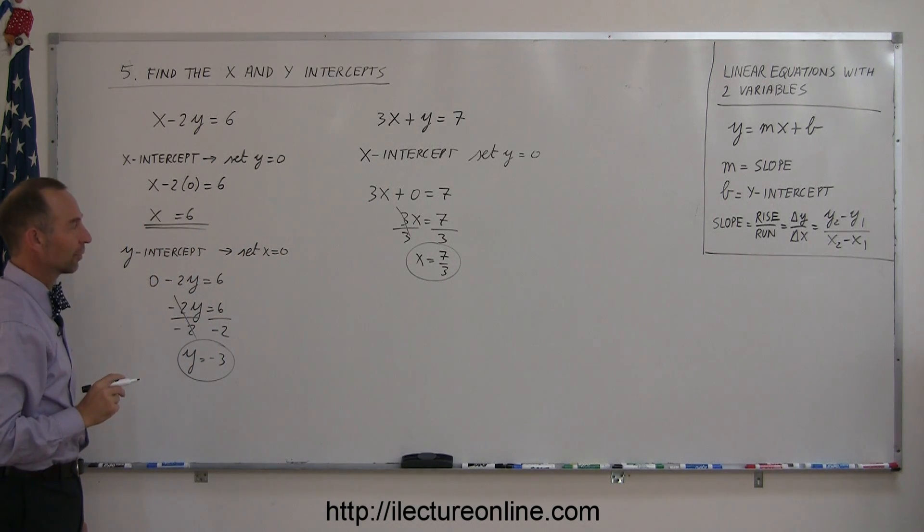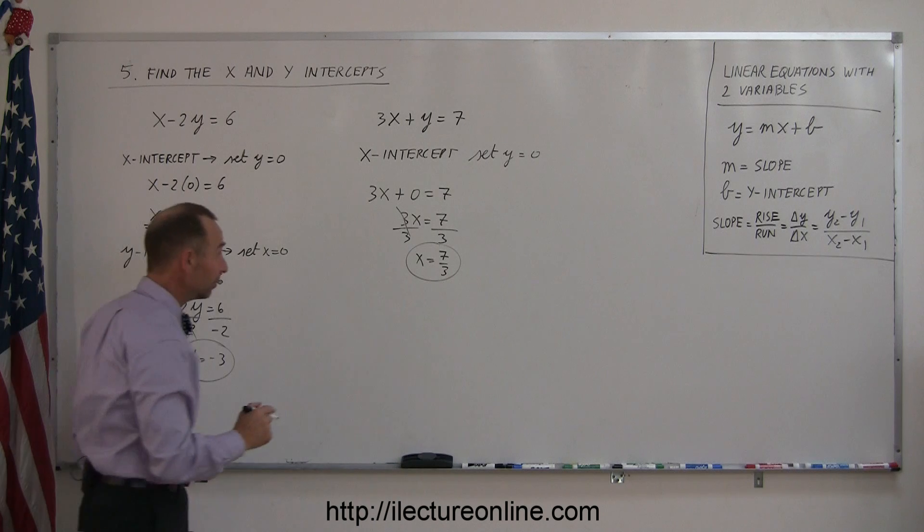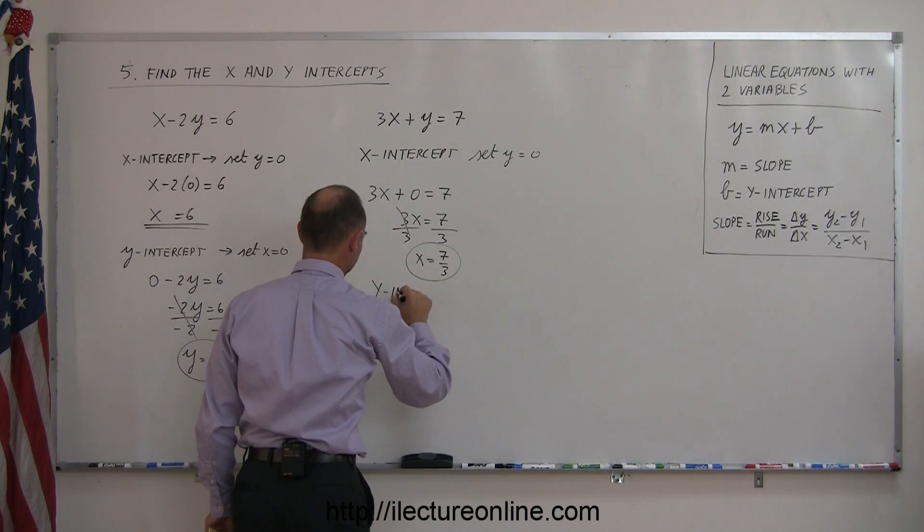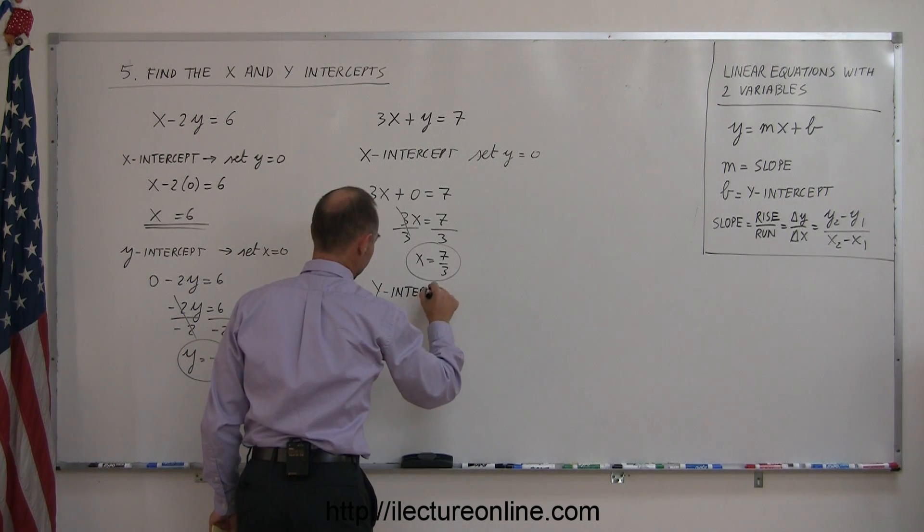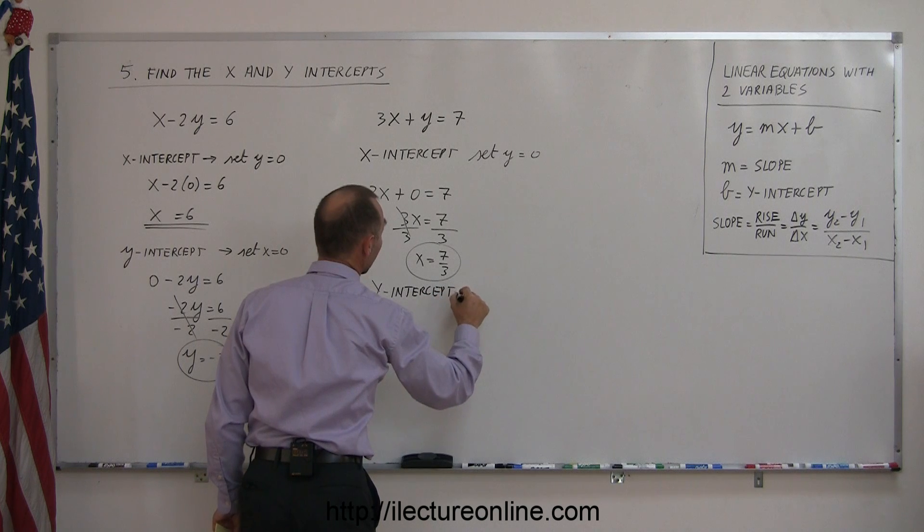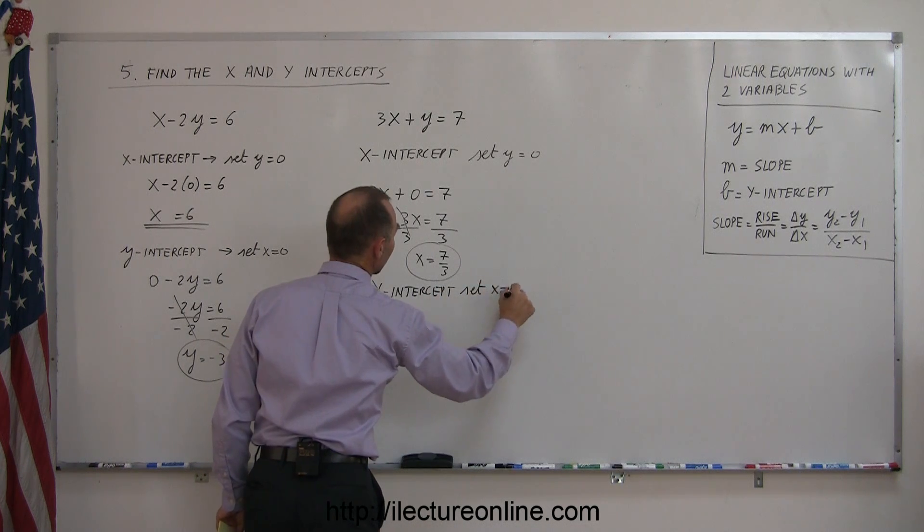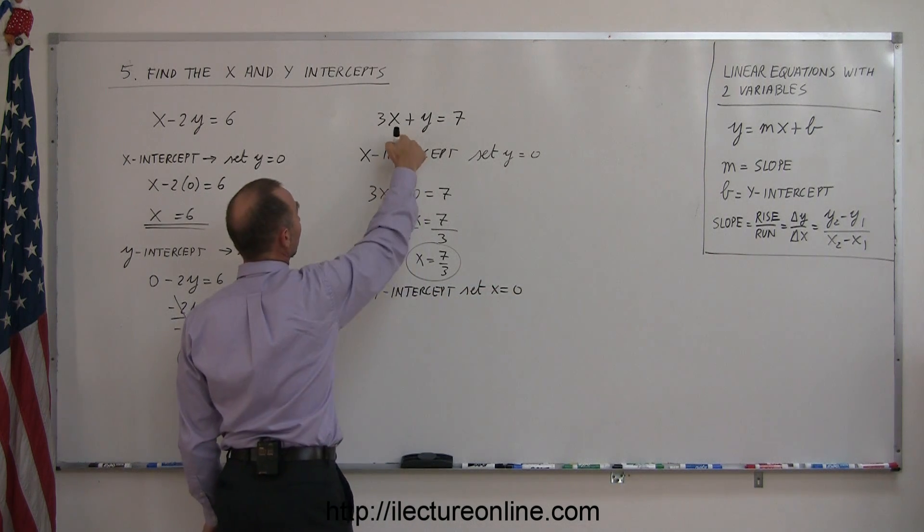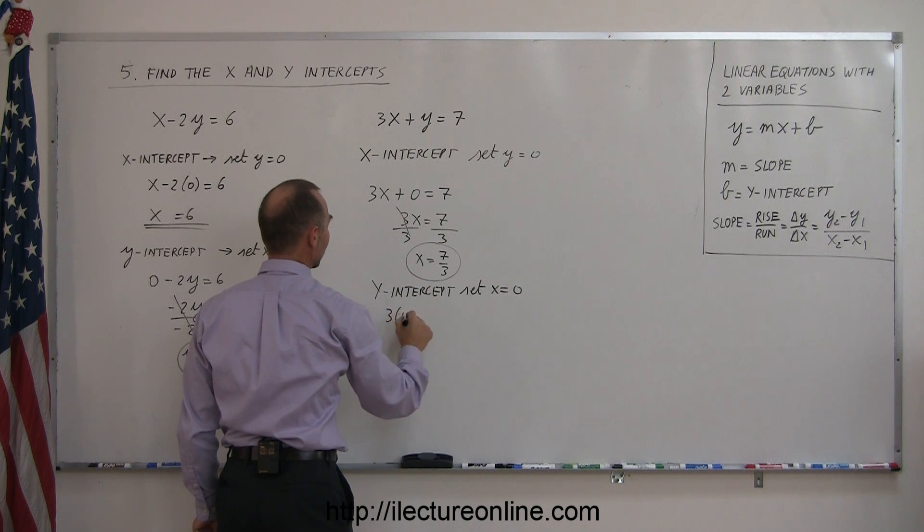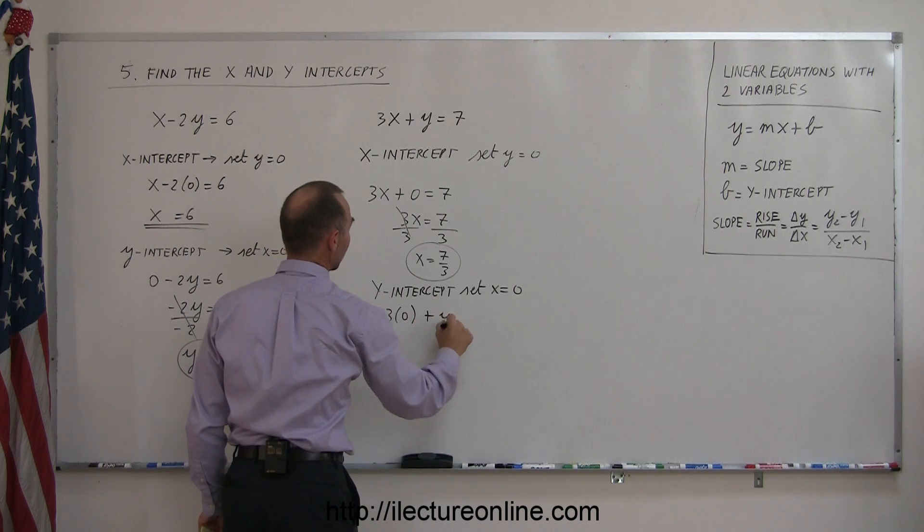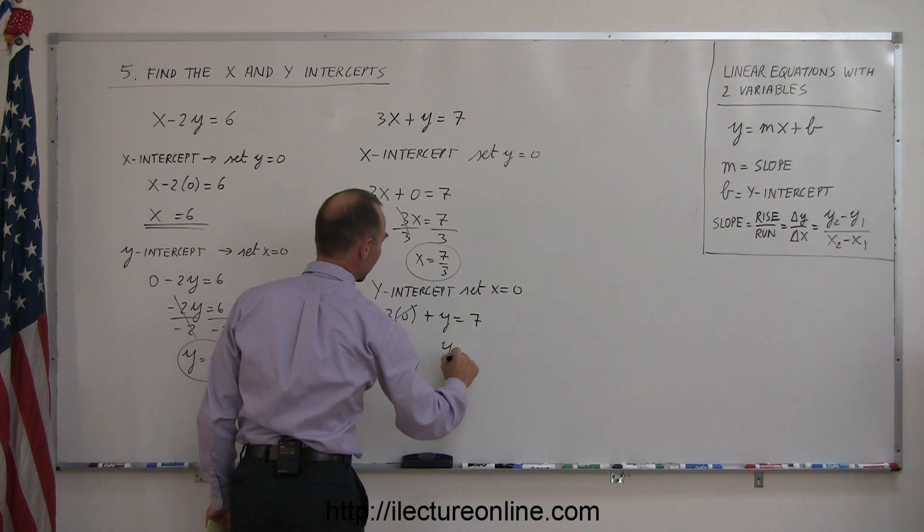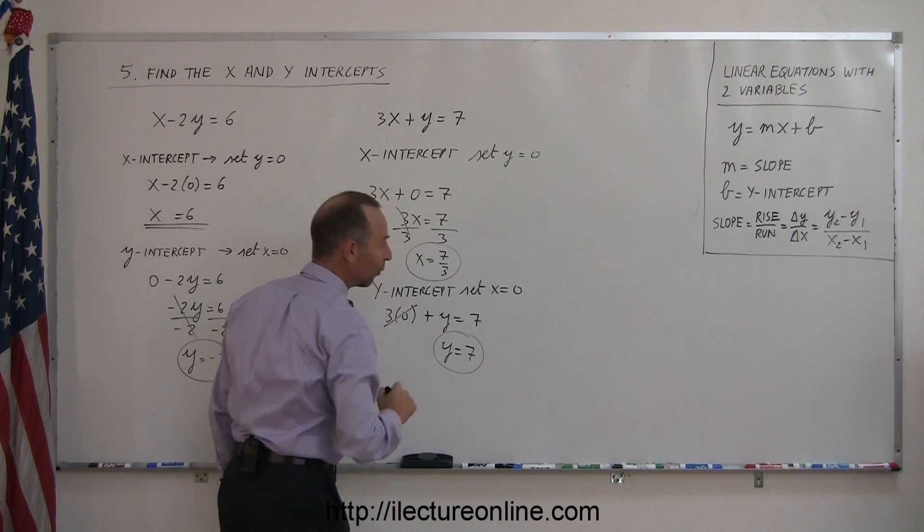To find the y-intercept, set x equal to zero. So, take my original equation. I take 3 times zero plus y equals 7. Of course, that cancels out. We get y equals 7. And there's your y-intercept. These are fairly straightforward.